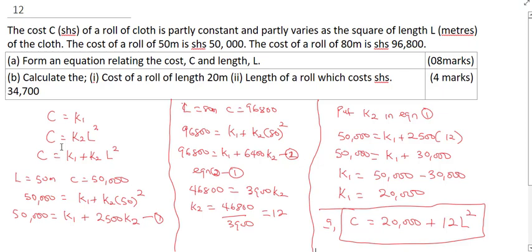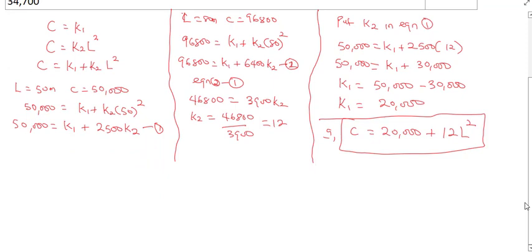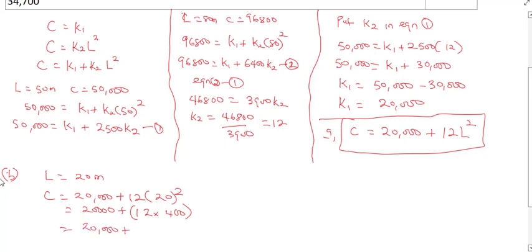Question B says, calculate the cost of a roll of length 20 meters. For L equals 20 meters, we're going to apply our relationship. C is equal to 20,000 plus 12 times 20 squared. This is going to be 20,000 plus 12 times 400. That's 4,800. So C is going to be 24,800. Final answer.